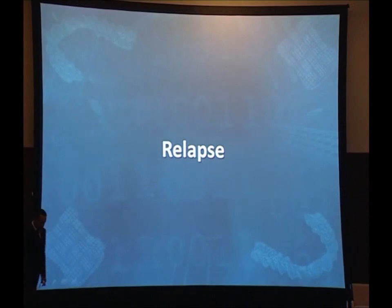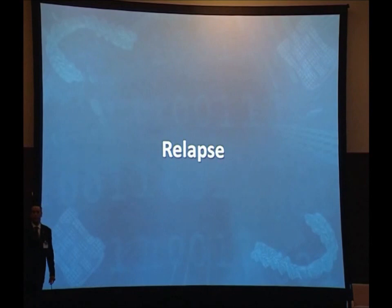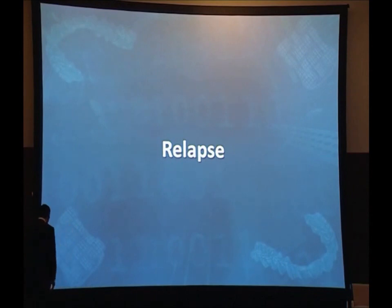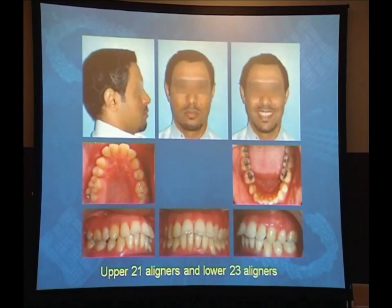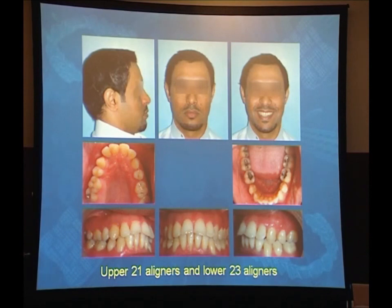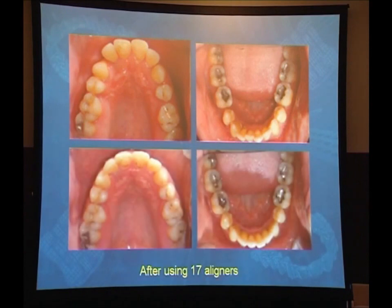Relapse cases — a lot of patients come to me with relapse, asking for a solution other than putting braces on again. They said they had enough from braces and needed another option. This patient relapsed after finishing orthodontic treatment with conventional braces and four premolar extractions. Now he has crowding in the lower arch, spacing in the upper arch, and some protrusion. After treatment, there was complete closure of the spaces and retraction of the upper incisors, with correction of the lower arch crowding.